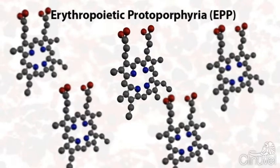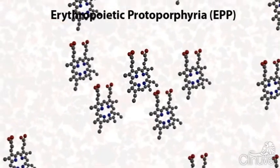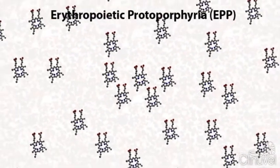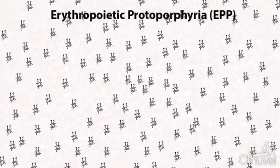While protoporphyrin-9 builds up around the body of EPP patients, the effects are most dramatic in the liver and the skin. In the liver, it can cause liver damage and ultimately liver failure. And in the skin, it can cause acute reactions called phototoxic reactions.